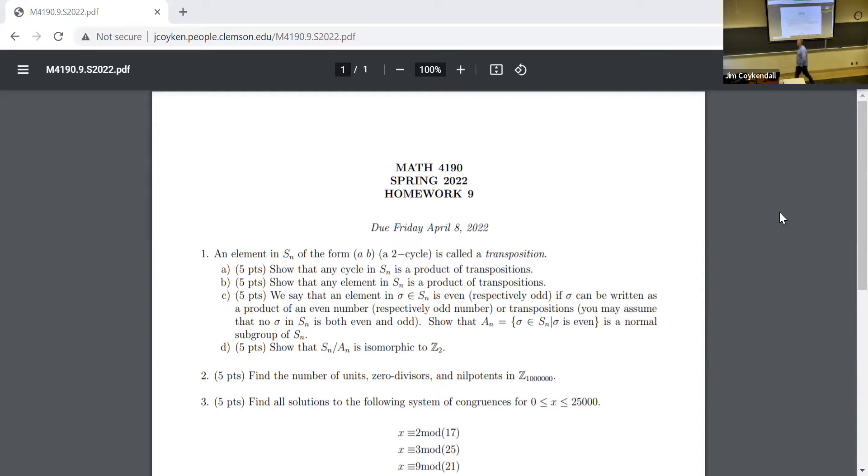To transpose things is to interchange any two things, right? Show that any cycle in S_N is a product of transpositions. So let me remind you what I mean by a cycle is something that looks like this. Where these are all different, right? And of course K must be less than N. If we're in S_N, you can't have more than N letters, right? Show that this is a product of transpositions.